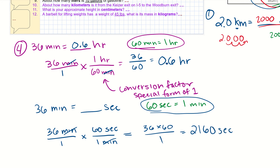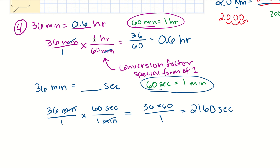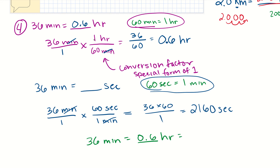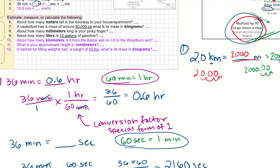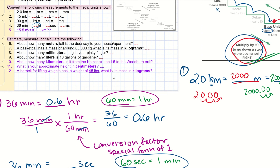So 36 minutes equals 0.6 hours, which also equals 2,160 seconds. The final thing you need to do is convert seconds to milliseconds — the ms means milliseconds. You're starting from seconds as the base unit and converting to milliseconds, and I've already shown you how to use the conversion chart for that, so I'll leave that last part of question four for you to do.